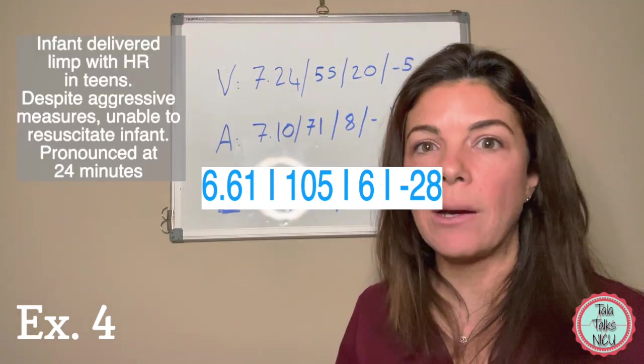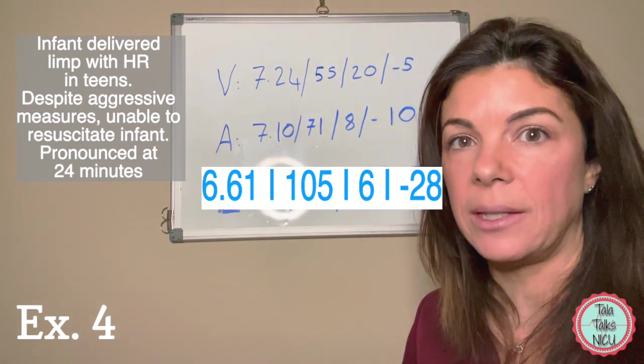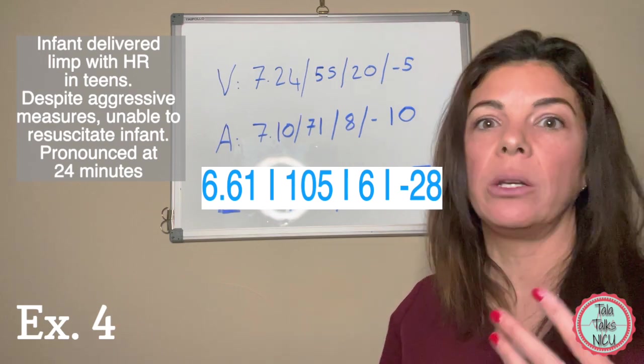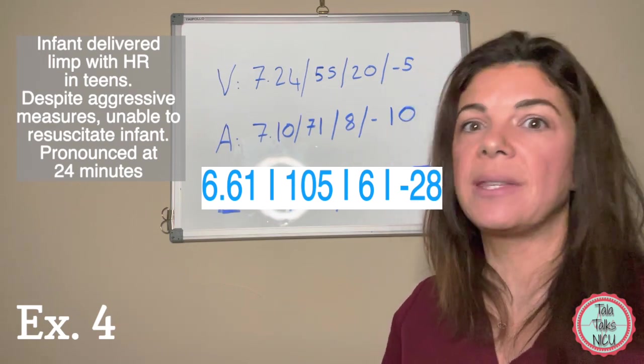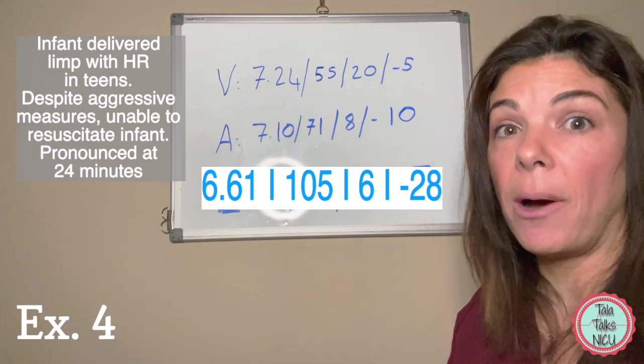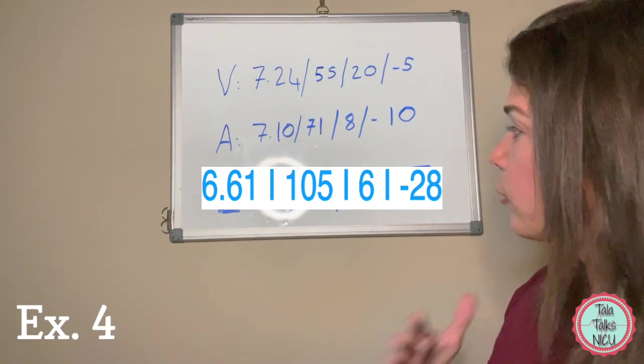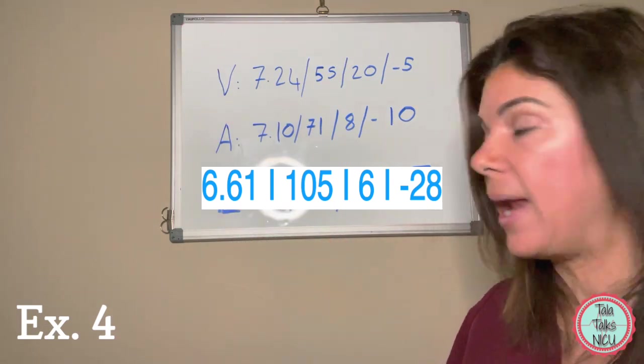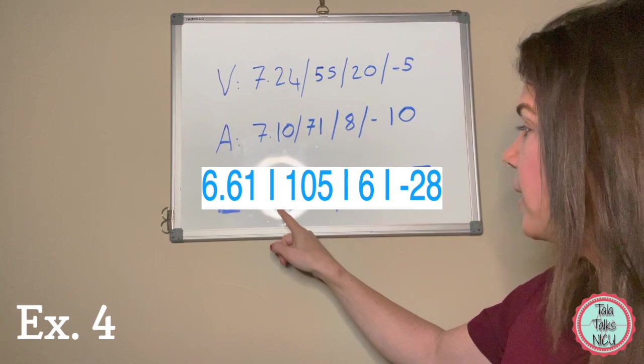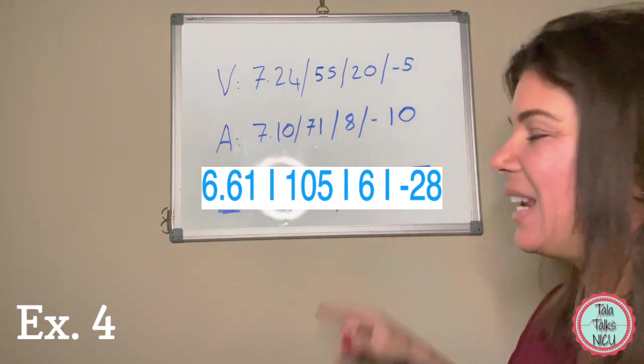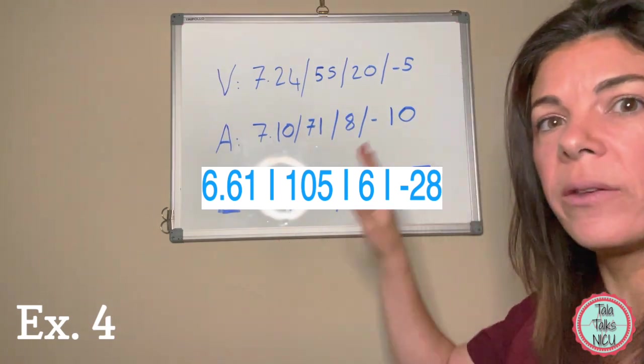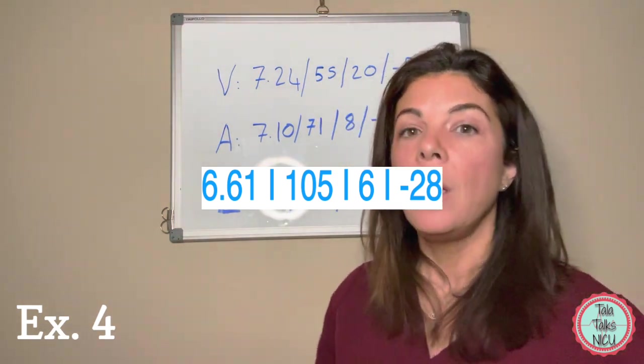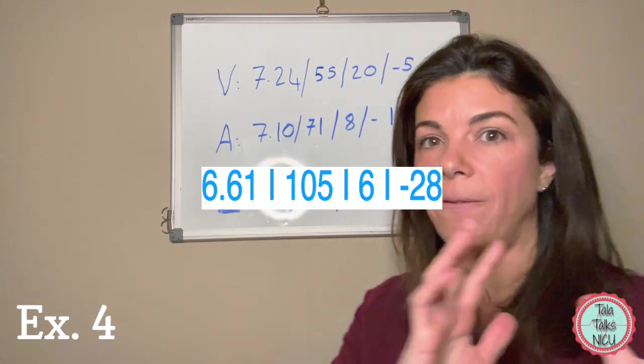Let's look at the blood gases. The venous is 7.24 minus 5, not horrible. The arterial is 7.1 with a minus 10. The baby came out completely limp, barely had a heart rate, and was extremely aggressively resuscitated. Unfortunately, despite extremely aggressive resuscitation with epi boluses, intubation, and the whole nine yards, the baby passed away.